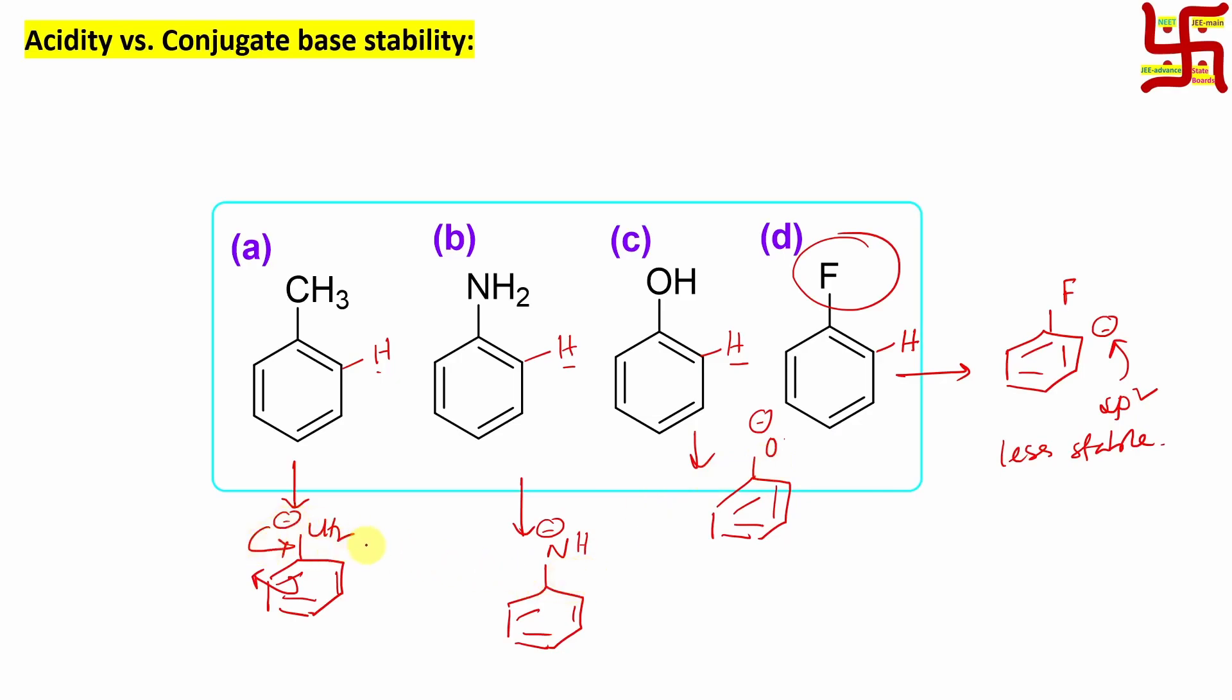In this case, if we look at the electronegativity table, O minus is more electronegative than NH minus, which is more electronegative than CH2 minus. Obviously here phenyl group attached. So according to electronegativity, oxygen is more electronegative than nitrogen than carbon. Consequently, I can say the stability of O minus is more than N minus, which is far more stable than CH minus.